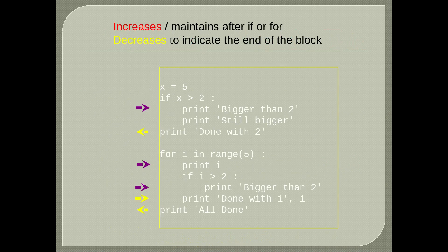Here are some examples of increased and decreased indentation. Think of the beginning and end of blocks. Purple increases and maintains after if or for. Yellow arrows indicate decreases to indicate the end of the block. Each block of code needs to have its own level of indentation.